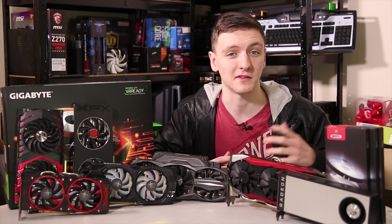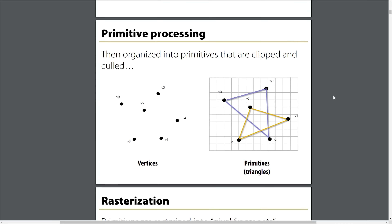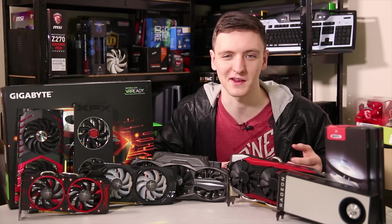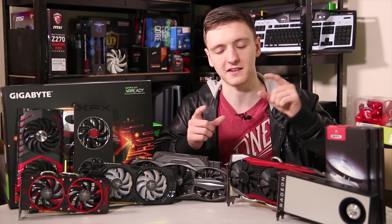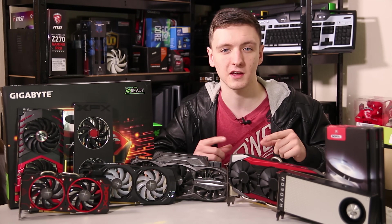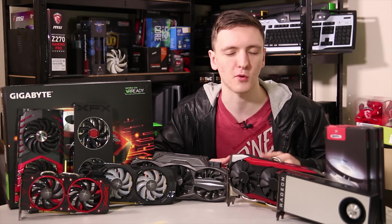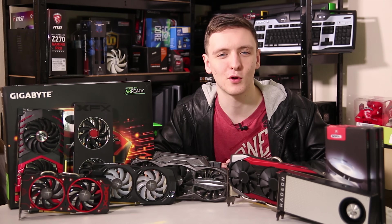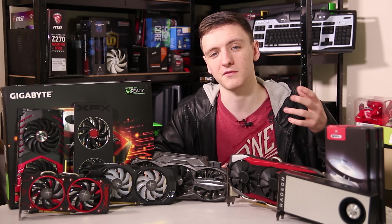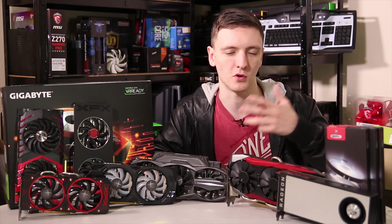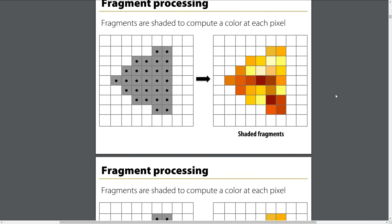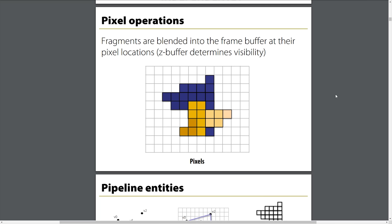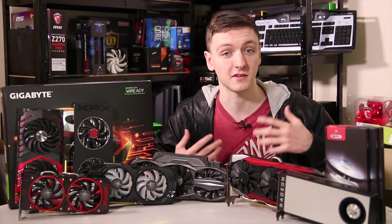The calculations, especially in gaming, that they're normally doing are calculations on vertices — basically points in 3D space with an X, Y, and Z axis — which are then connected to two other points to make a triangle. That is called a primitive, or a polygon. Those shapes are then put through a process called rasterization, which is basically converting these shapes using mathematical equations into actual pixels or pixel fragments, to then be colored, shaded, given texture, and displayed on the screen.